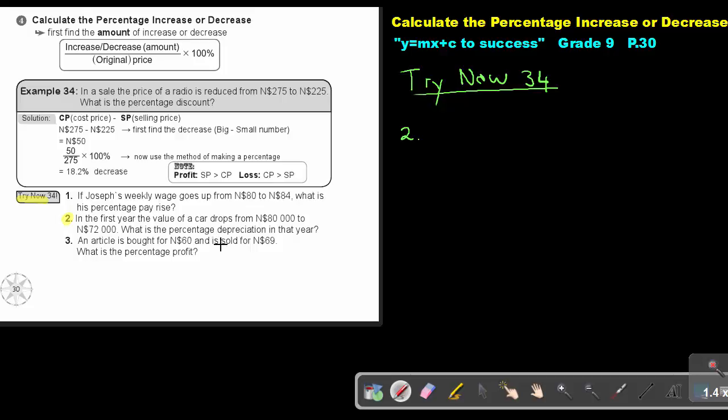What is the percentage depreciation in that year? So first we are going to just find the difference. And that's going to be the 80,000 minus the 72,000. And that's going to be 8,000. And now to find that percentage, we are going to take the 8,000 and we're going to put it over the one they mentioned first. And the one they mentioned first is 80,000.